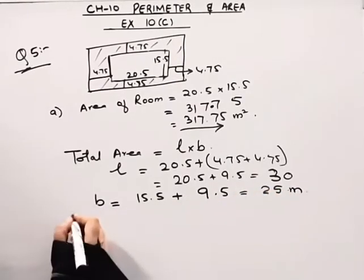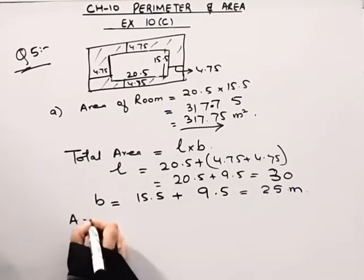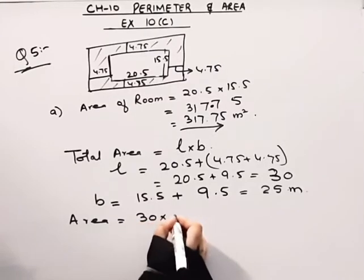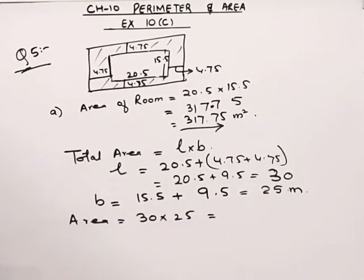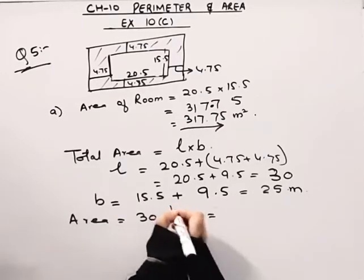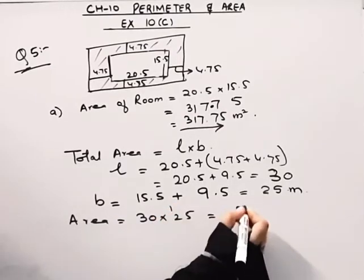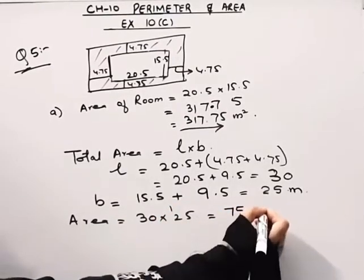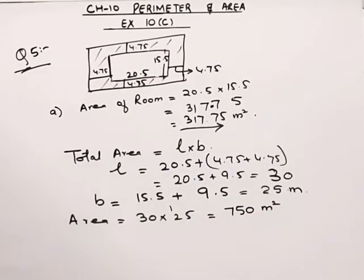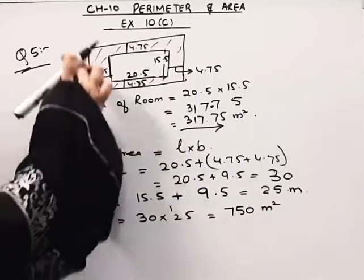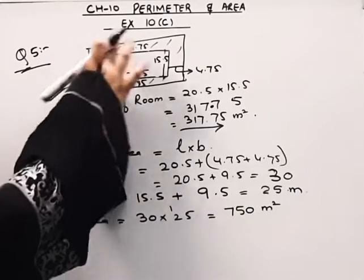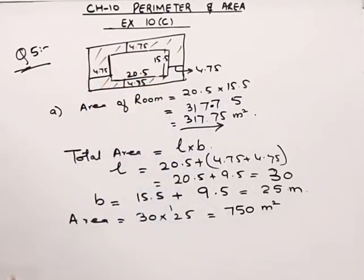Area will be L into B — 30 into 25. This comes out to be 750 meter square. This is actually the whole area — the area of the room along with the veranda.